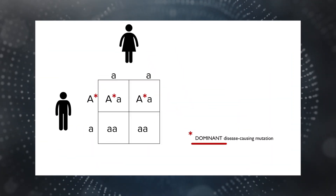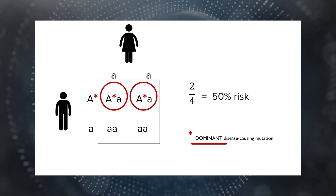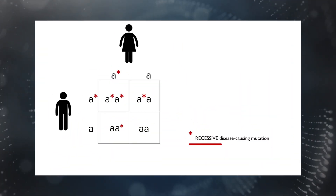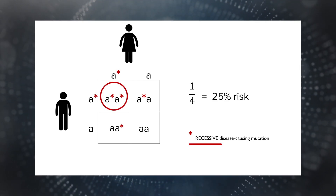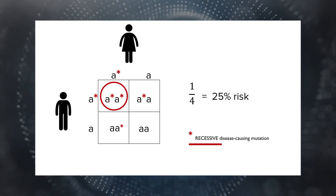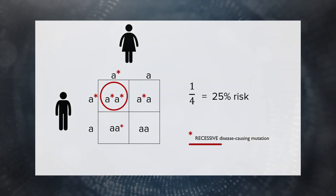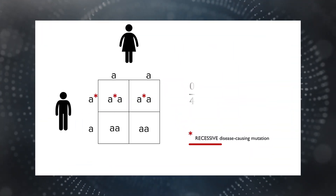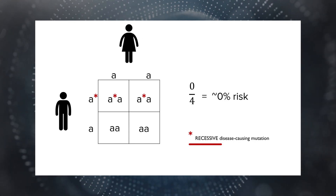For a parent carrying a dominant copy of a gene for any condition, there is a 50% chance that the child will not inherit that condition. If both partners in a couple carry a recessive gene for the same condition, there is a 25% chance that the child will inherit the condition, even if neither parent shows symptoms. If only one parent has a recessive copy of a gene for any condition, there is an almost 0% chance that the child will inherit that condition.